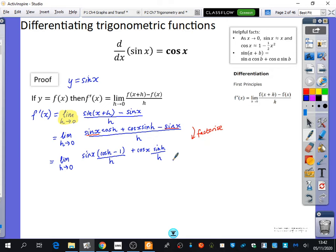I've factorized it and split it into two separate fractions. I'm ready to start taking limits, which means I'm going to make h become really tiny. When I make h become really tiny, I know what's going to happen to cos h and sine h because of the small angle approximations. As h becomes really tiny, cos h becomes one minus a half h squared from the small angle approximations, and sine h becomes just h.